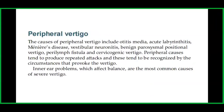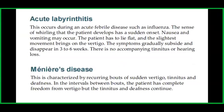Peripheral vertigo: the causes include otitis media, acute labyrinthitis, Meniere's disease, vestibular neuronitis, benign paroxysmal positional vertigo, perilymph fistula, and cervicogenic vertigo. Peripheral causes tend to produce repeated attacks that are recognized by the circumstances that provoke the vertigo. Inner ear problems which affect balance are the most common causes of severe vertigo. Acute labyrinthitis occurs during an acute febrile disease such as influenza; the vertigo has a sudden onset, nausea and vomiting may occur, the patient has to lie flat, and the slightest movement brings on the vertigo. Symptoms gradually subside and disappear in three to six weeks with no accompanying tinnitus or hearing loss.